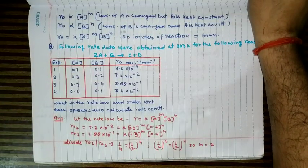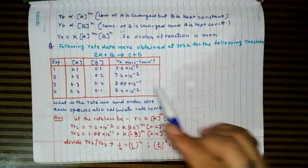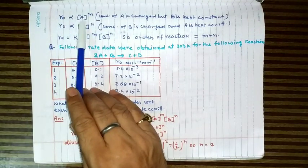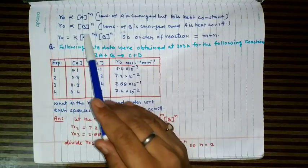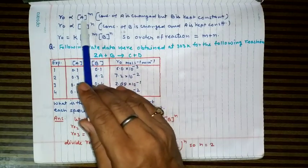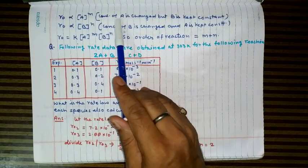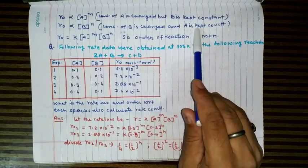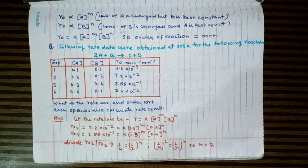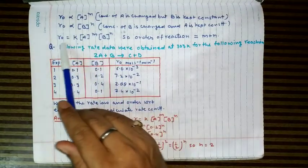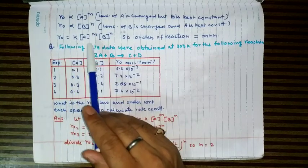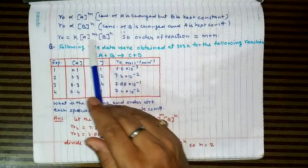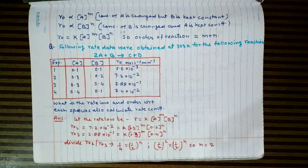Let A react with B to give product. To find how the initial rate depends on A, suppose it depends as [A]^m. We keep B constant and vary A, then keep A constant and vary B. If rate varies as [B]^n, then the overall rate expression is r = k[A]^m[B]^n. Once m and n are determined, the overall order is m+n. An example question will make this clearer.